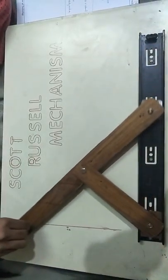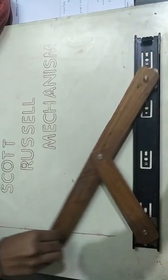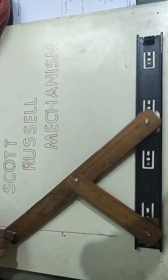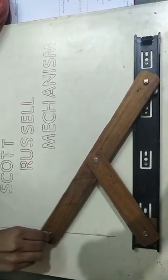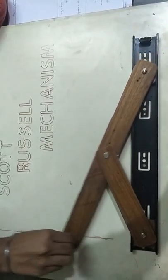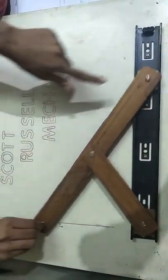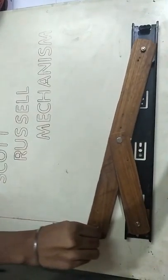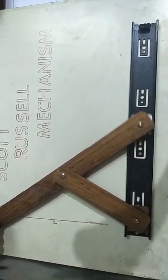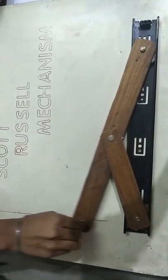And by this we can say that Scotch Russell Mechanism gives an exact straight line motion. So here is the motion which we can see. Scotch Russell Mechanism gives turning as well as sliding motion. This is the turning motion, and this one is the sliding motion. So this is the movement of the mechanism, and from here we can tell that this mechanism gives the straight line.